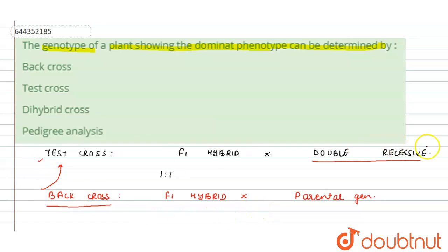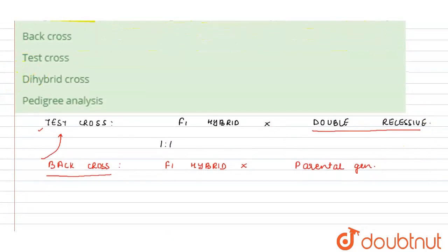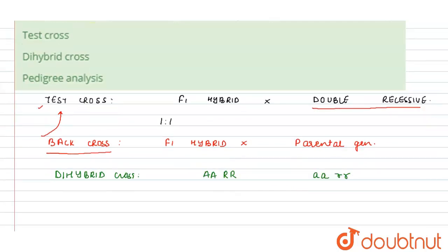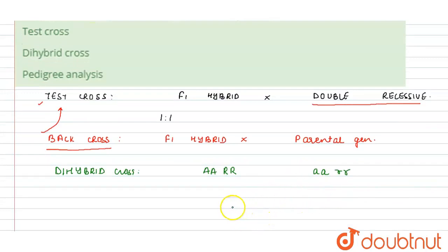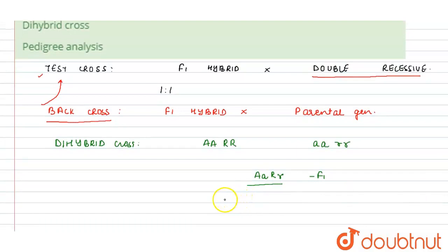So there is a difference between the two. Now, what do we mean by the dihybrid cross? The dihybrid cross means when we use more than two types of characters. For example, axial and red — axial and red flowers — where the flower is axial in position and red in color, and another plant is terminal in position and white in color. When we cross these, we obtain the F1 hybrid: capital A, small a, capital R, small r. When this F1 hybrid is selfed, we obtain a ratio of 9:3:3:1.